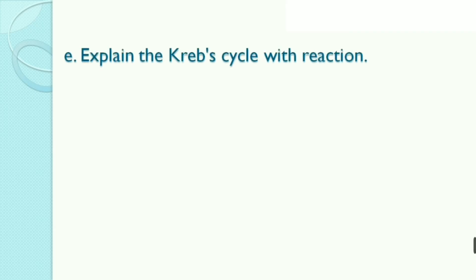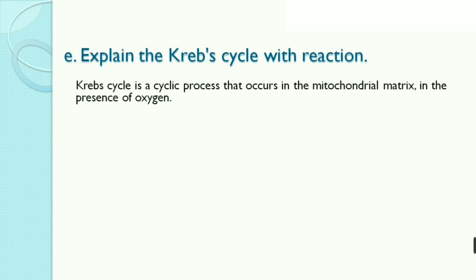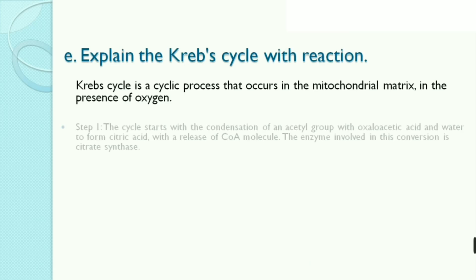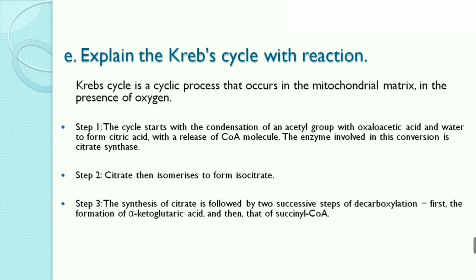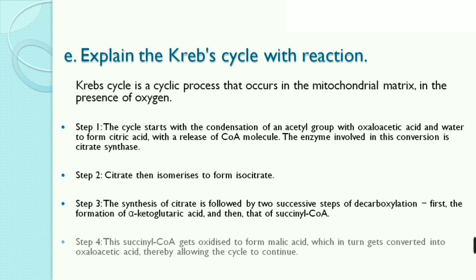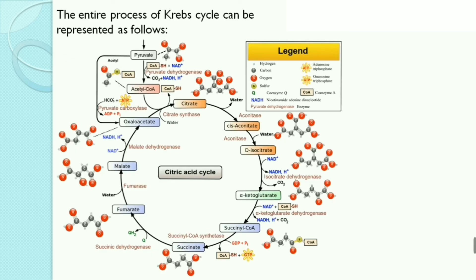Fifth, explain the Krebs cycle with reactions. Krebs cycle is a cyclic process that occurs in the mitochondrial matrix in the presence of oxygen. Step 1: the cycle starts with condensation of an acetyl group with oxaloacetic acid and water to form citric acid, with release of CoA; the enzyme involved is citrate synthase. Citrate then isomerizes to form isocitrate. Step 3: two successive decarboxylation steps occur — first forming alpha-ketoglutaric acid, then succinyl CoA. Step 4: succinyl CoA gets oxidized to form malic acid, which is converted into oxaloacetic acid, allowing the cycle to continue.